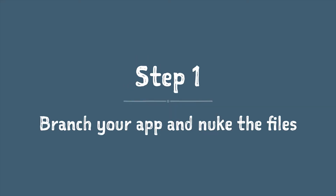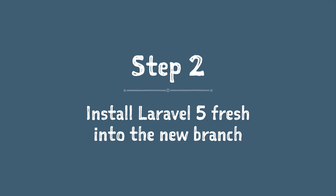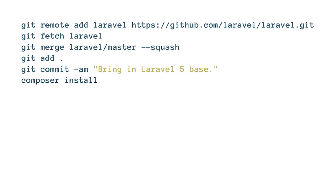A lot of people would ask: why don't I just go into composer.json and update the Laravel framework requirement from 4.2 to 5.0? It's possible, but it's not worth the work. Even though this approach seems complicated, it's a lot simpler in the end. So branch your app, check out a branch like `laravel-5-upgrade`, and nuke it — delete every file except for the git folder. Now we have a completely blank folder. We can git commit, and then pull in Laravel 5 completely fresh as if this were a brand new site.